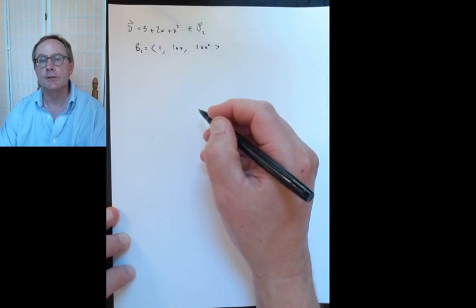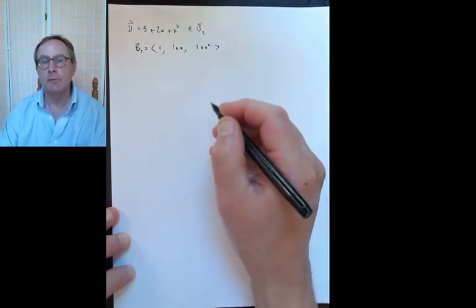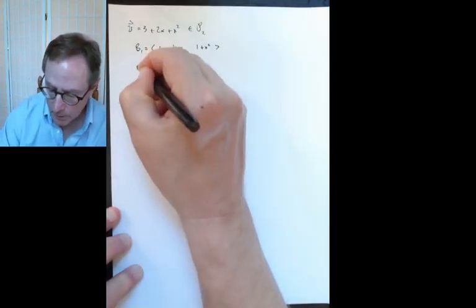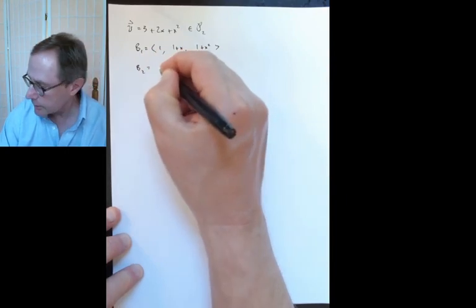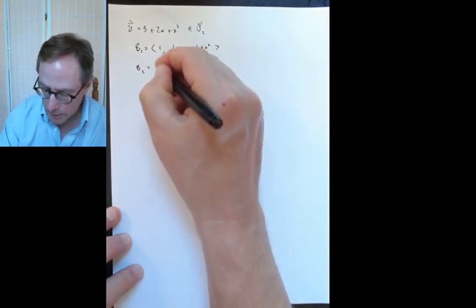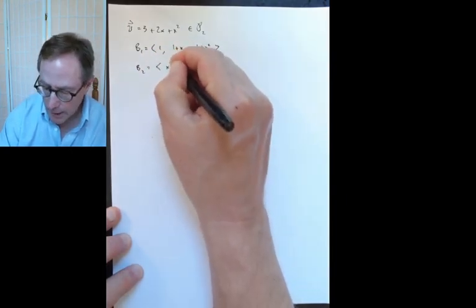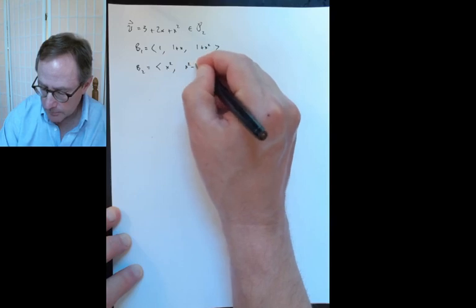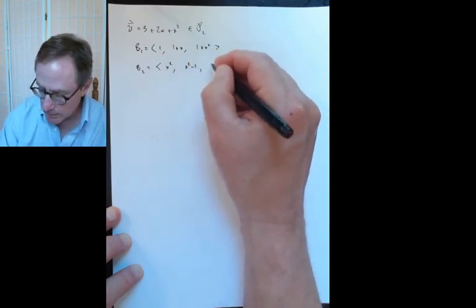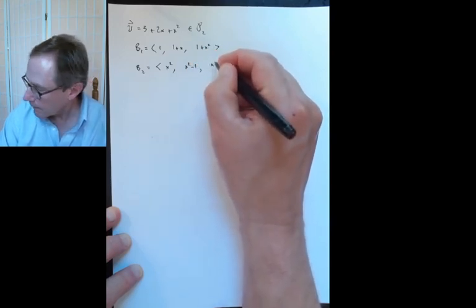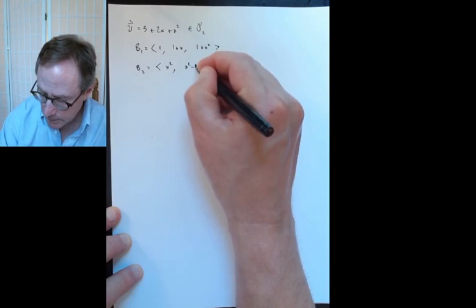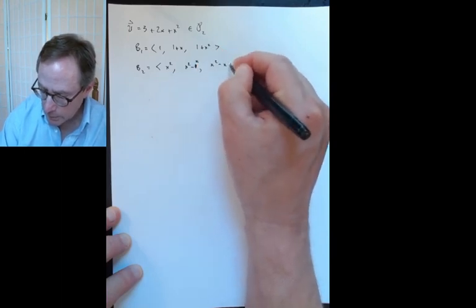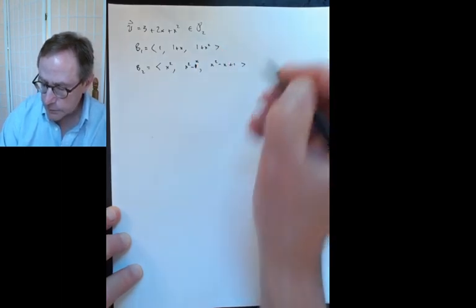I use that basis a lot, just as an example that's not too hard and not too easy. And B2 — again, another example that's not too hard and not too easy — is: x squared, x squared minus 1, and x squared minus x plus 1. Sorry about that.